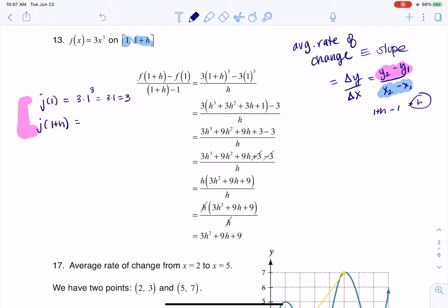Now j of 1 plus h will be 3 times, instead of 1 cubed, I'll put the 1 plus h in, and I'll cube that. Now that's going to require me either using Pascal's triangle or multiplying a bunch of things out. And I don't know how you feel like doing it. If you want to, you could foil these three things out, it would take you a while. I personally am going to use Pascal's triangle and do a little shortcut.